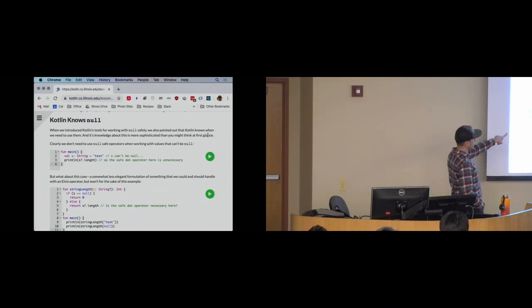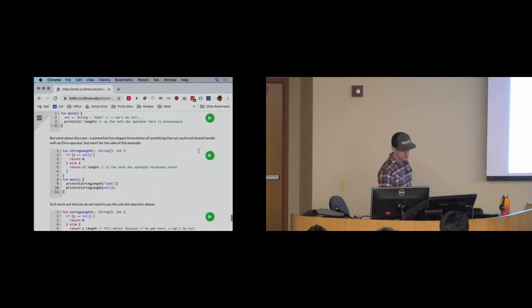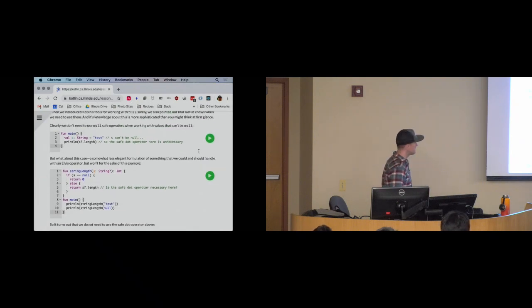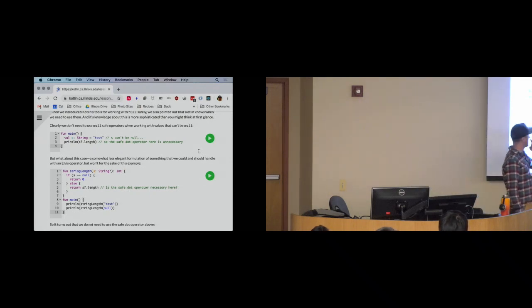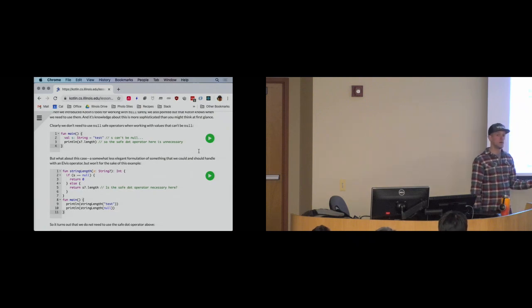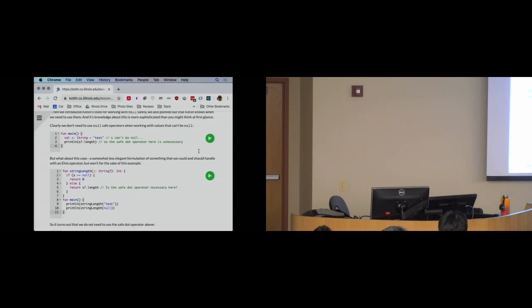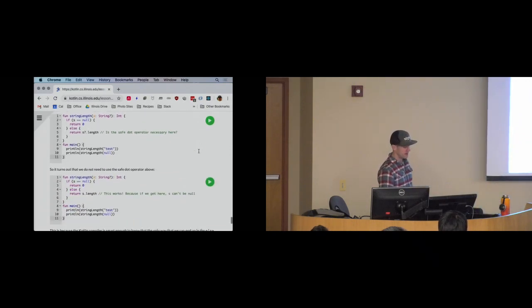Let's look at a case with some control flow. I've got a function called string length that takes a nullable string and returns an integer. If the string is null, I return zero; otherwise I return the length of the string. What do we know about what happens inside the else branch? We know if we got into else, it means s isn't null. The question is: does Kotlin know this? Happily, yes — the Kotlin compiler is very good at figuring this out.